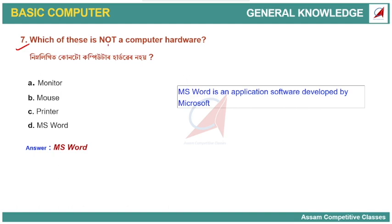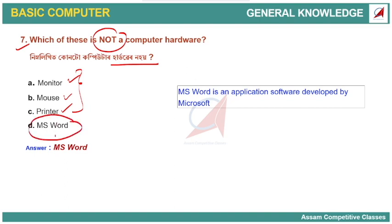Which of the following is not computer hardware? Monitor, mouse, and printer are hardware. But MS Word — Microsoft Word — is application software. It is not hardware; it is application software developed by Microsoft.